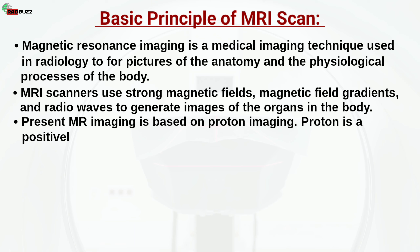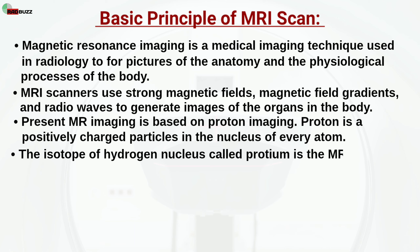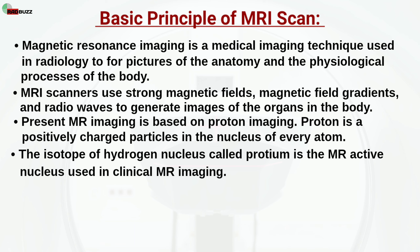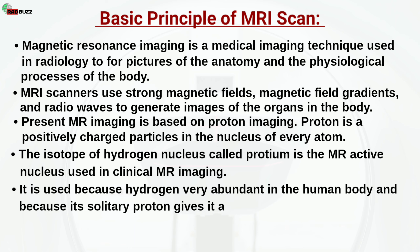A proton is a positively charged particle in the nucleus of every atom. The isotope of hydrogen nucleus is called proteum. Proteum is the MR-active nucleus used in clinical MR imaging. It is used because hydrogen is very abundant in the human body and because its solitary proton gives it a relatively large magnetic moment.